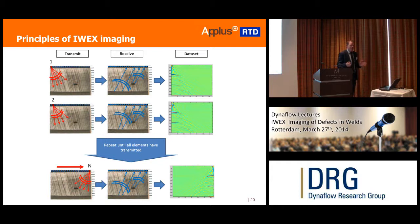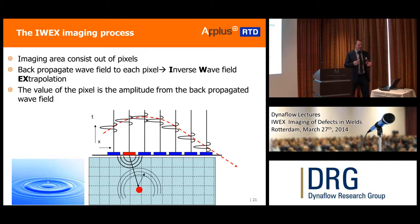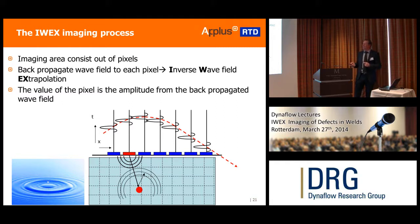Now I need to do something with the dataset. The dataset is a bunch of wave fields that I've recorded. The concept of IWOX is that the wave field you've recorded can be extrapolated further in time — I can calculate where that wave field is going further in space and later in time. But what I'm doing is the opposite: having measured this wave field, I can calculate where it came from earlier in time and backwards into space. That explains the acronym IWOX — Inverse Wave Field Exploration.